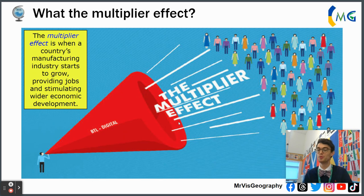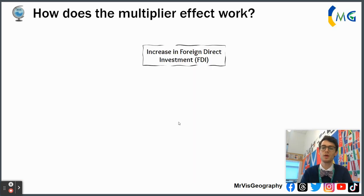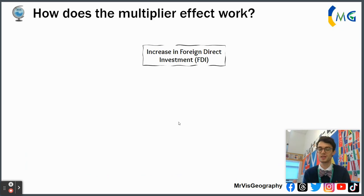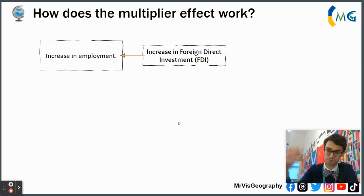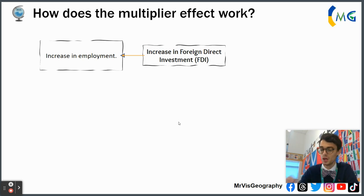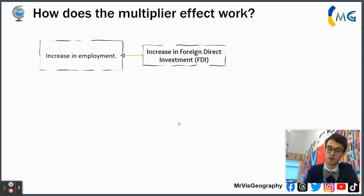The multiplier effect works by boosting the manufacturing sector, providing more purchasing power to citizens and therefore increasing investment in the local economy. It often starts with foreign direct investment, or FDI — a foreign company that invests into the local economy. In the case of Nigeria, Shell Oil, which is an Anglo-Dutch company, invests money in the Nigerian economy, providing employment to local Nigerians.